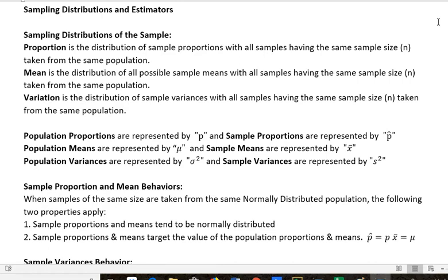Population proportions are represented by P, but sample proportions are represented by P-hat. Population means are represented by mu and sample means are represented by X-bar. Population variances are represented by sigma-squared and sample variances are represented by s-squared.